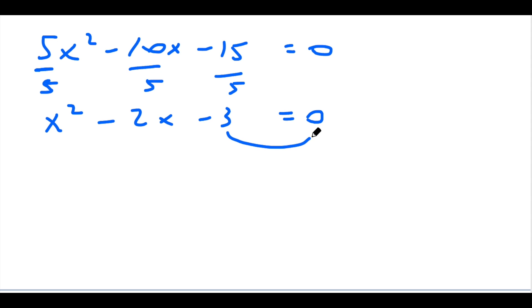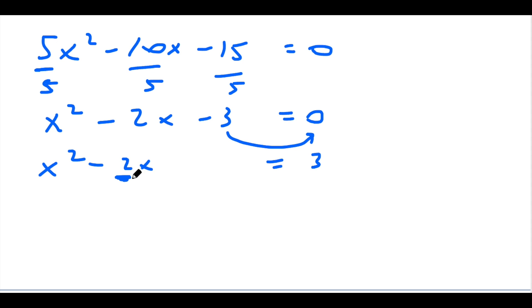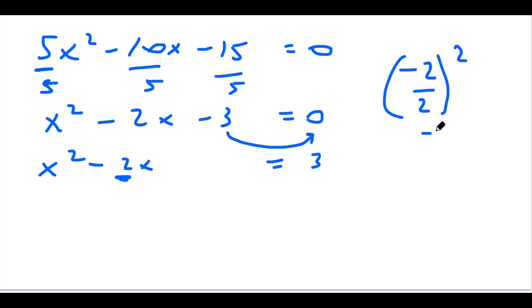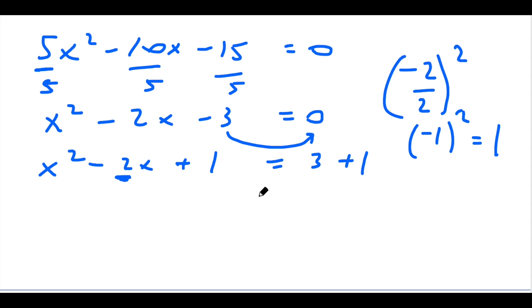I would move that constant to the other side by doing the opposite — I would add 3. So now we have x squared minus 2x equals 3. And then to complete the square, we take half of that middle coefficient, half of that number in front of the x, and we square it. So negative 2 divided by 2 and squared — that's going to be negative 1 squared, which is equal to 1. So if we add 1 to the left side, we want to keep that balance and add 1 to the right side.